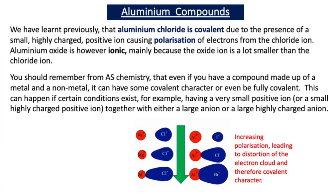The three main aluminium compounds we're going to focus on in this video are aluminium oxide, aluminium hydroxide, and aluminium chloride. Aluminium chloride is covalent because there is a small, highly charged positive ion, Al3+, next to a large negative ion, Cl−, which causes polarisation of electrons and distortion of the electron cloud, leading to covalent bonding.